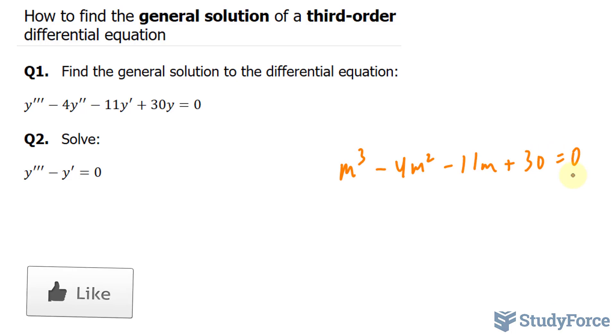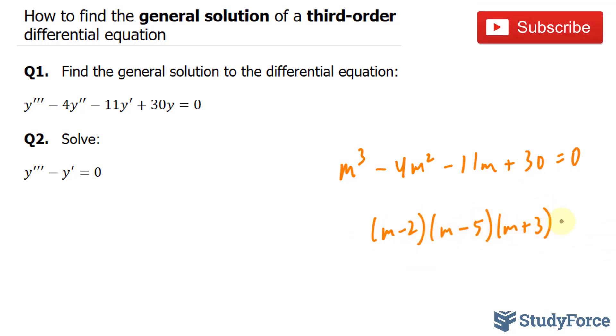And from here, what we have to do is factor. Now, factoring cubic functions is never fun. In fact, in order to factor this, you'd need to graph it and you can find out what the roots are from there. On the other hand, you can always use trial and error. And if you do use trial and error, you should end up with the following factored form equation. We'll get m minus 2, bracket m minus 5, bracket m plus 3 is equal to 0.